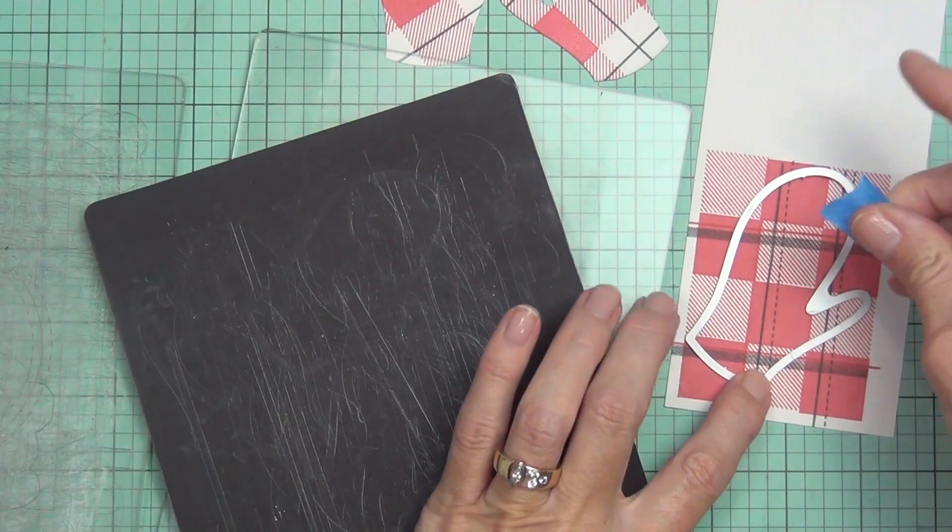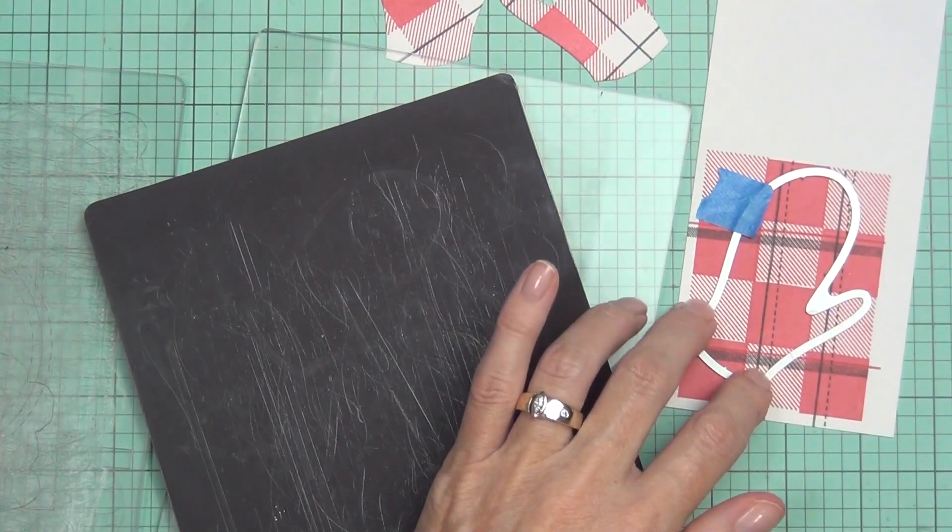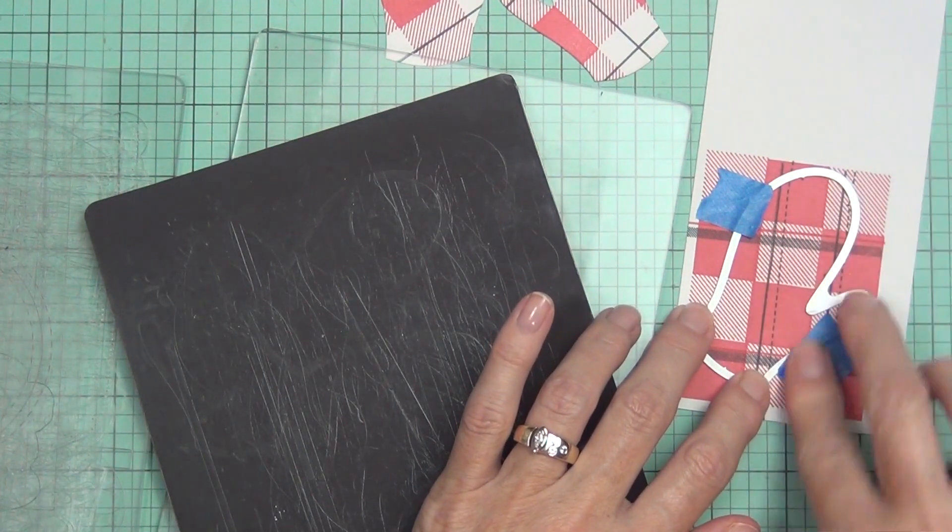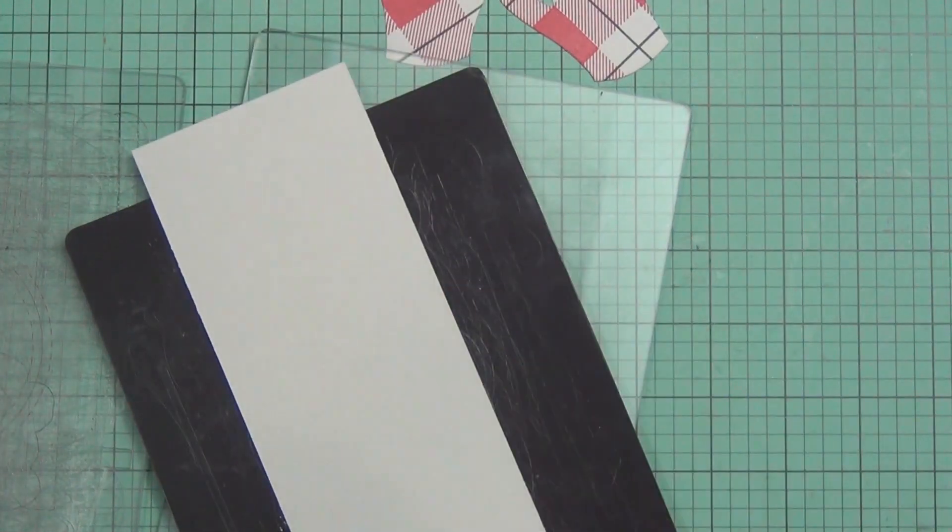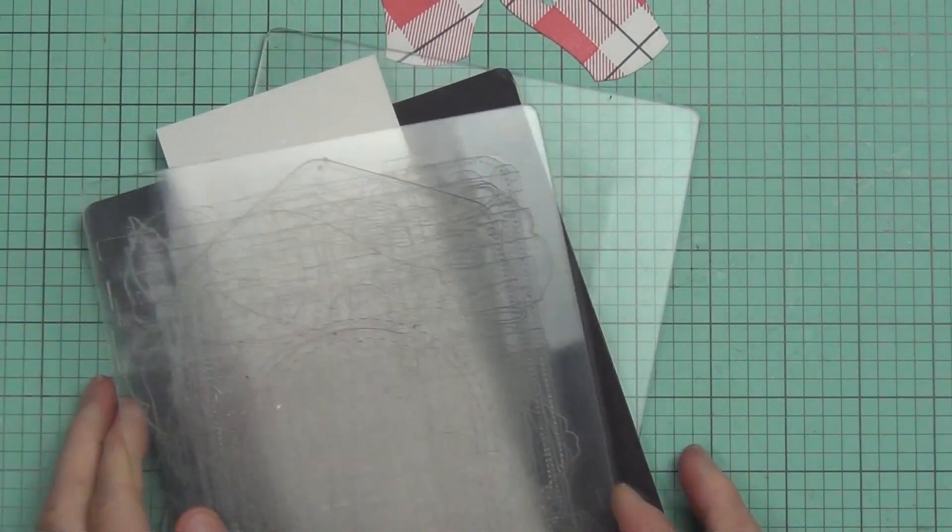So if you want to see another card using this same set, head to my blog. The link will be in the description below and you can see what I did with the other mitten.